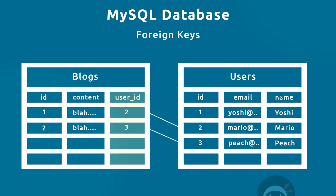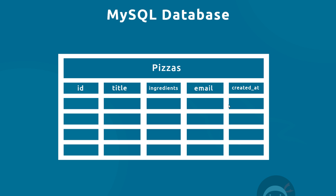In our case, we'll be keeping it really simple. We have a form to capture an email, a pizza title, and some ingredients, so our table is going to look something like this: we have an id for each pizza, the title, the ingredients, the email captured on the form, and a created_at property which will be a timestamp for when the pizza was first created. In the future, if we had real users, the email field could be replaced with a user id as a foreign key to a users table, but since we don't have an authentication system we'll just store the email inside the pizzas table.